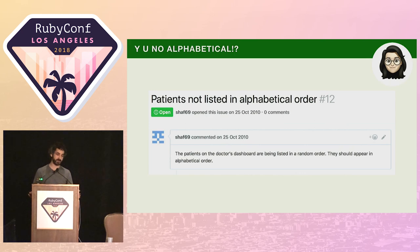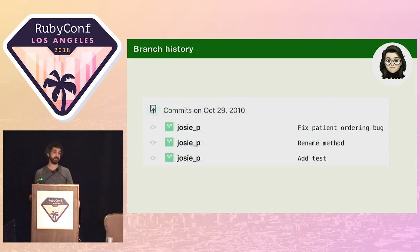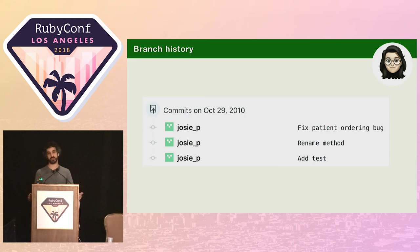Yesterday, Josie had been working on a bug where patient records were being displayed in the wrong order, and by the end of the day she'd put together a fix. The commit history was a bit of a mess, and her plan had been to tidy up this morning — hence her choice of reading on the way in.